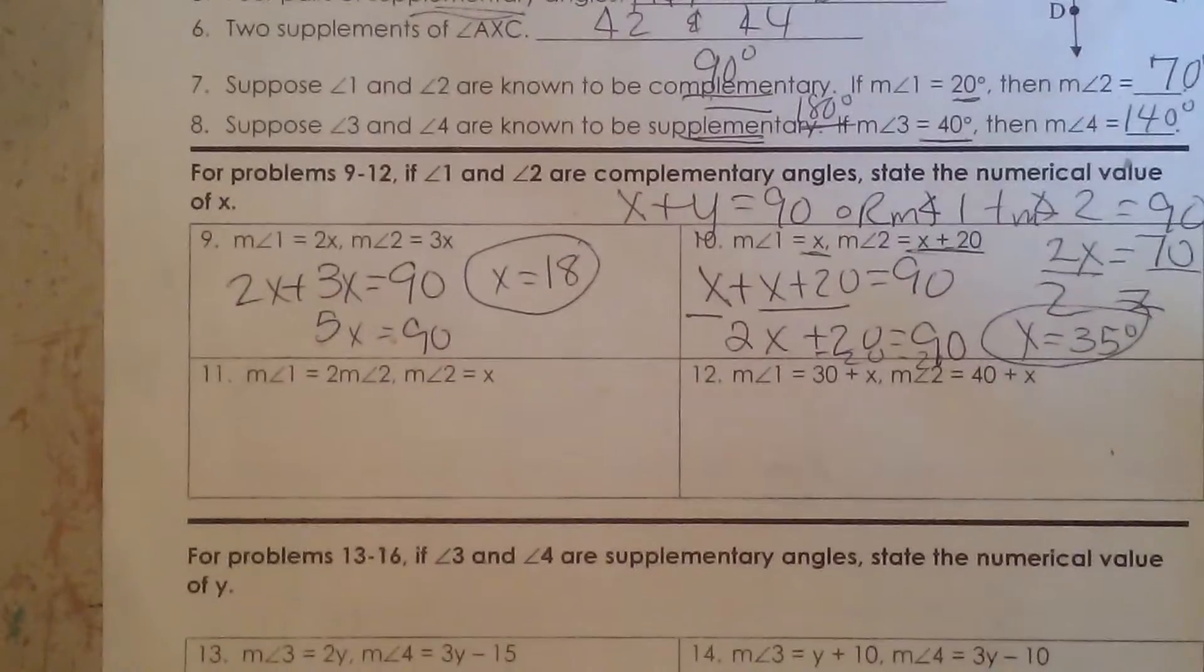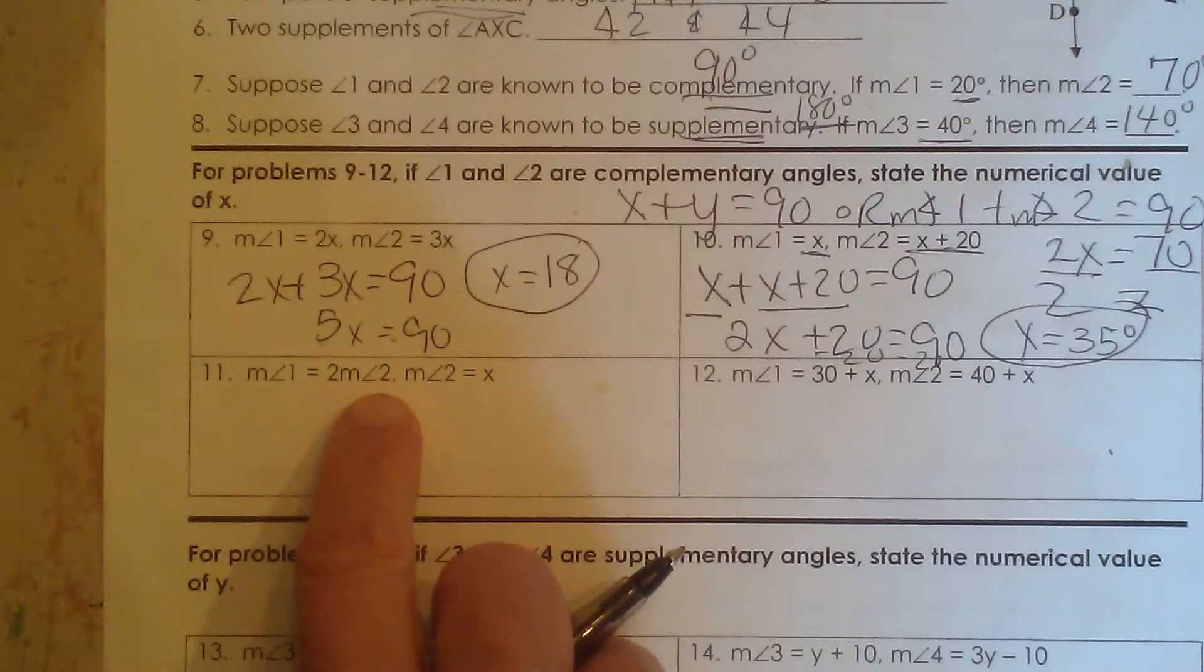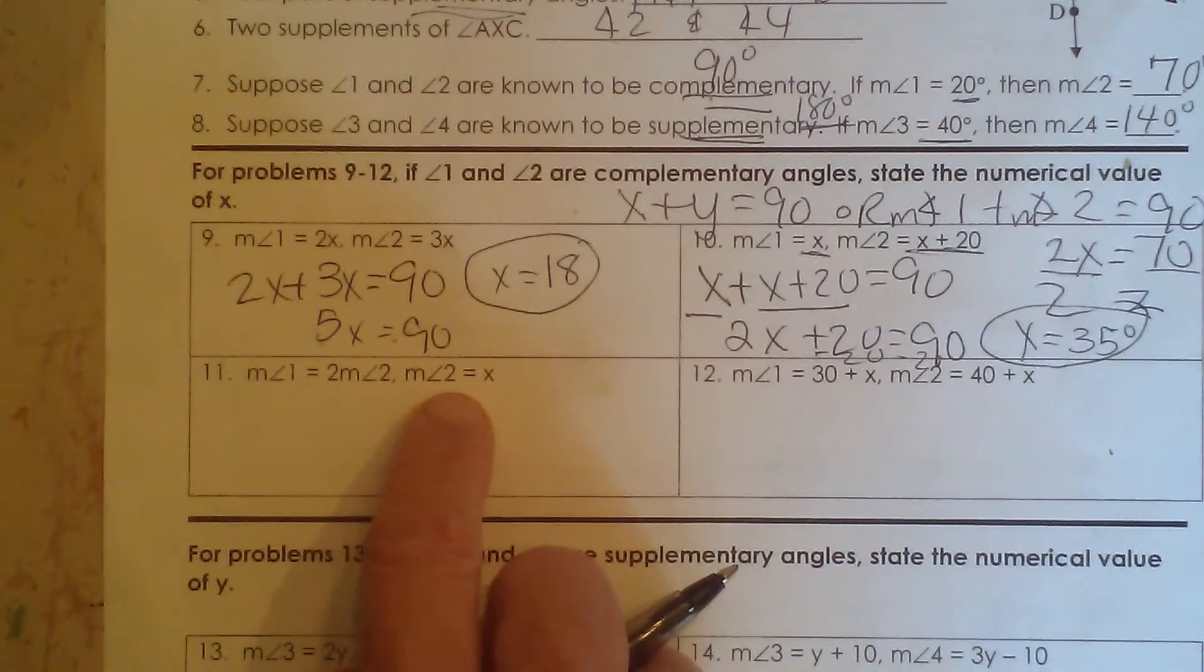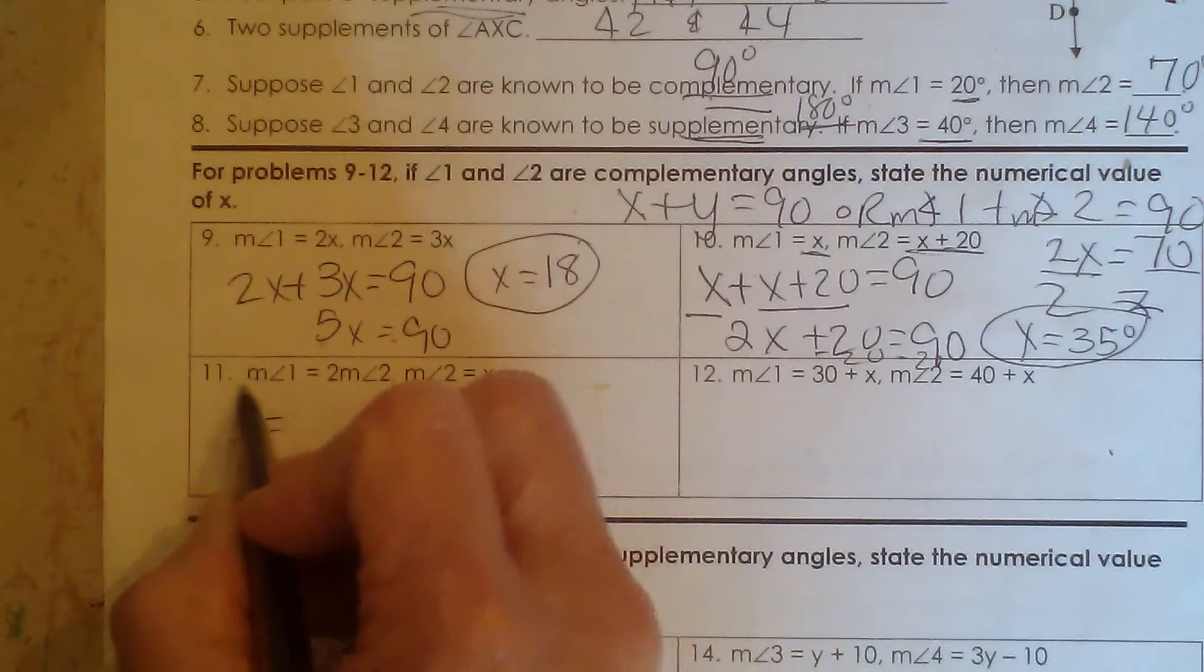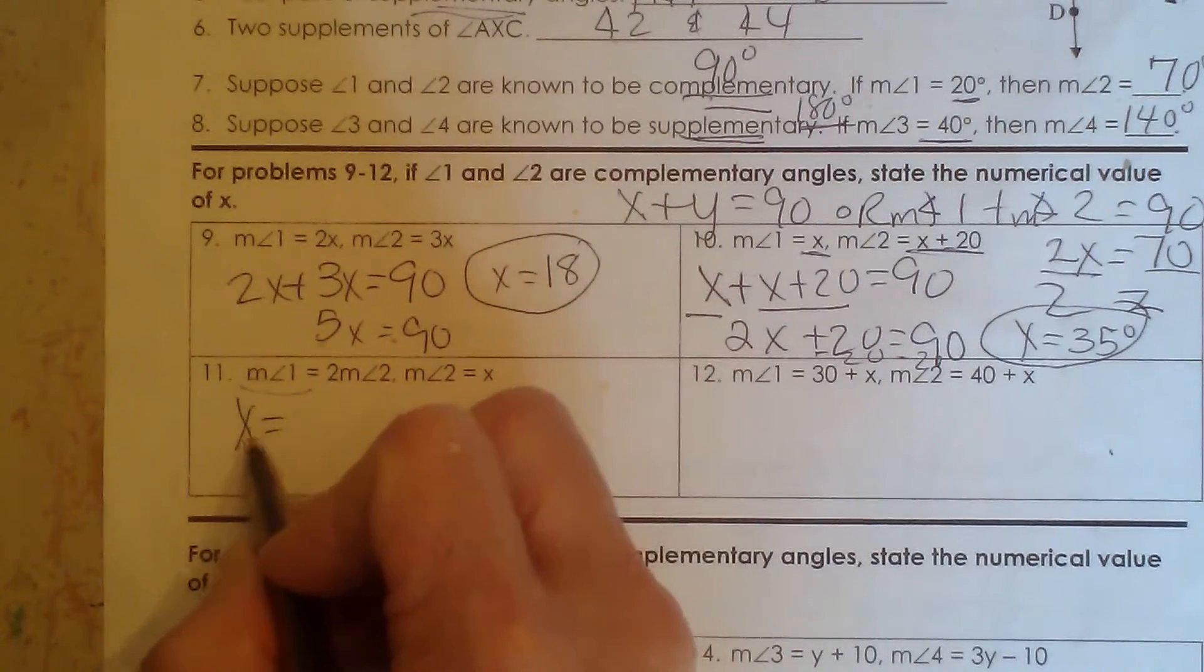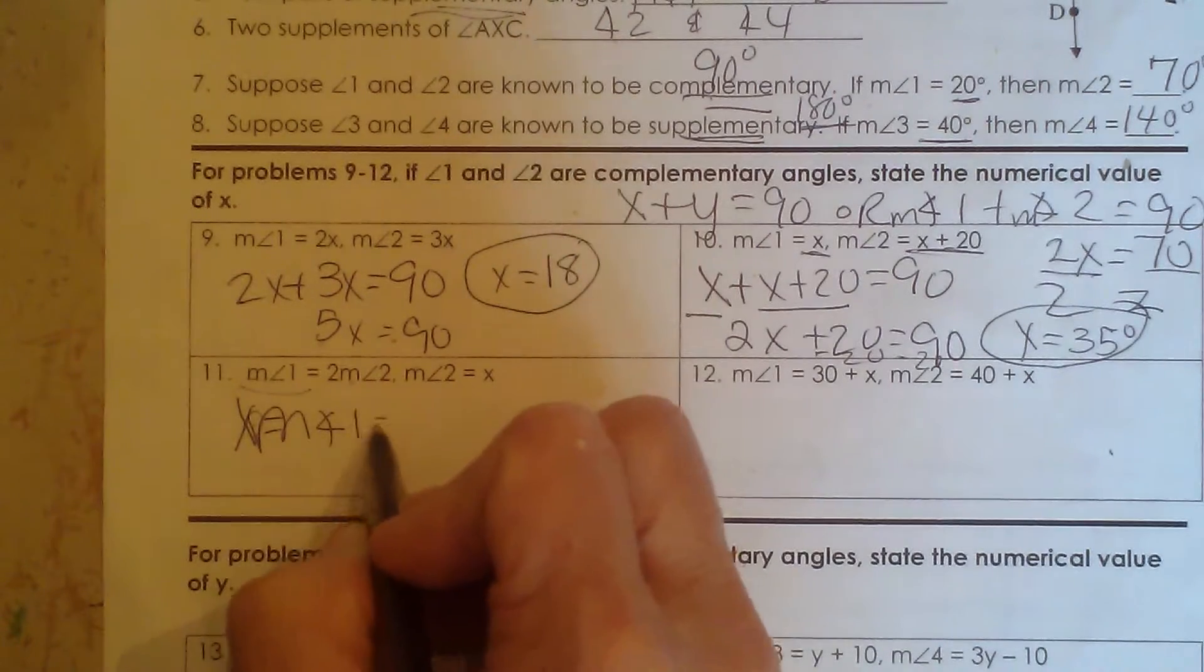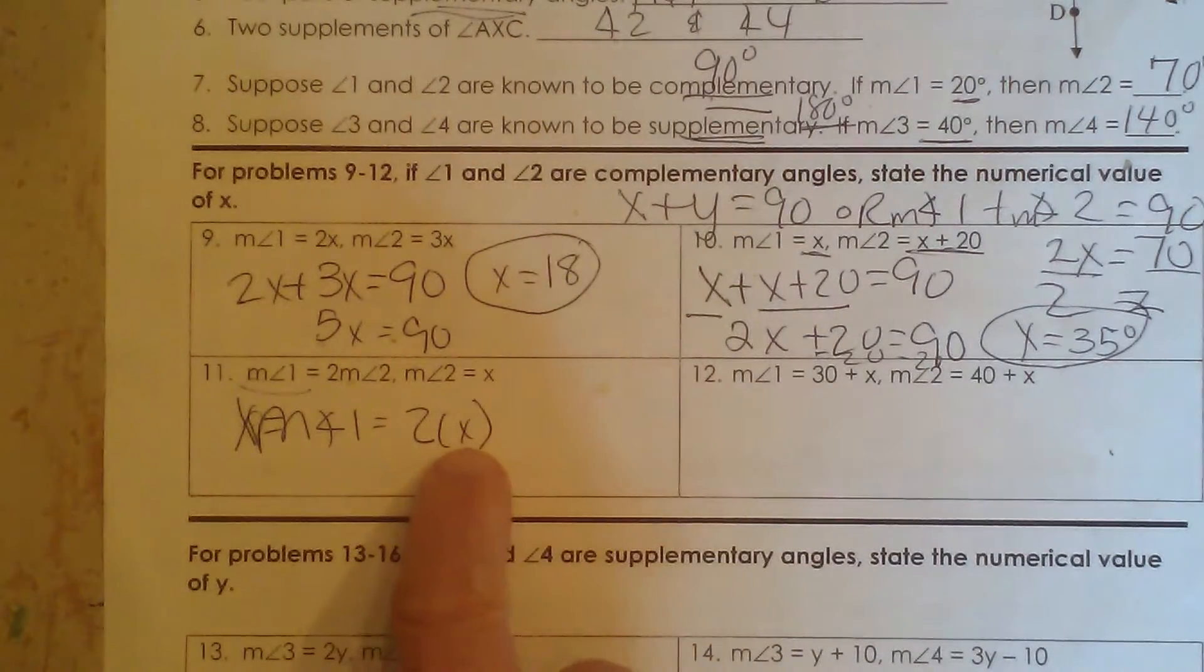Okay, let's look at the next one. Angle 1 is equal to 2 times the measure of angle 2. Well angle 2 is equal to x. So if angle 2 is equal to x, and we know that the measure of angle 1 is equal to twice angle 2, the measure of angle 1 is going to equal 2 times the measure of angle 2. So that means the measure of angle 1 is just 2x.